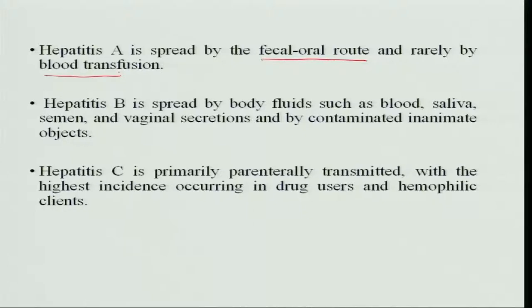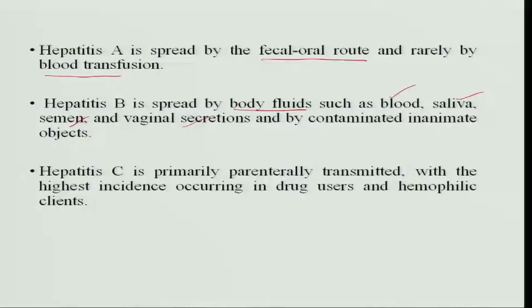Hepatitis B is spread through body fluids like blood, saliva, semen, and vaginal secretions. It can also be transmitted through contaminated inanimate objects — for example, if a person cutting vegetables gets blood on the vegetable, the virus stays on it and may infect another person who eats it. Hepatitis C is parenterally transmitted.